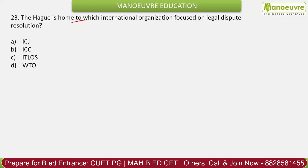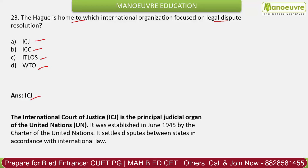Question 23: The Hague is home to which international organization focused on legal dispute resolution? Options: ICJ, ICC, ITLOS, WTO. The correct answer is the ICJ — the International Court of Justice. It is the principal judicial organ of the United Nations, established in 1945, with its headquarters in The Hague, Netherlands. It settles disputes between nations. It is the only UN organ headquartered outside New York.